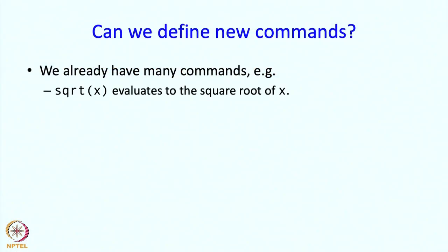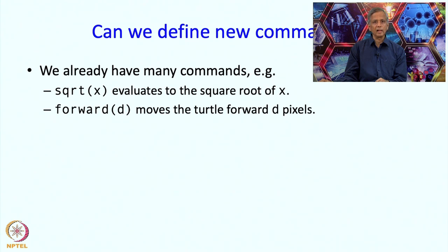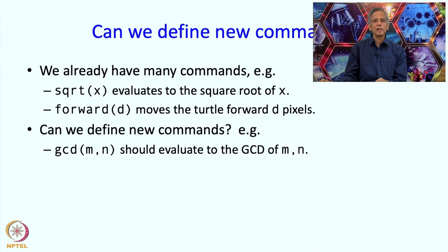The central question that functions address is: how do we define new commands? We already have a whole bunch of commands — for example, square root of x, where square root is a command and if you pass it the argument x, you get the square root. Forward is a command, and given an argument d, it causes the turtle to move d pixels. So can we ourselves make new commands? For example, we would like a command gcd(m, n) which should evaluate the greatest common divisor of m and n.